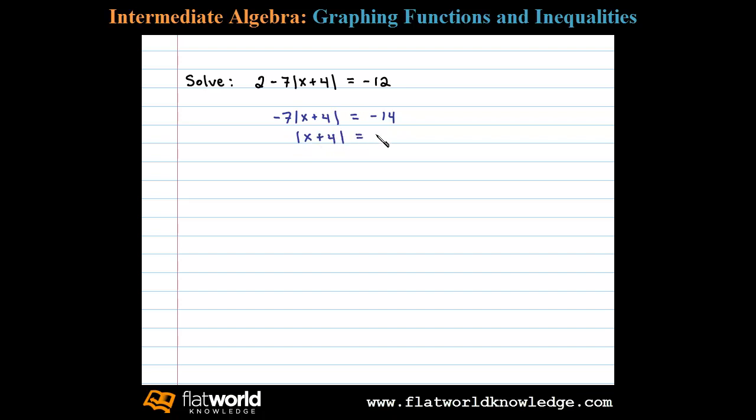Once we have the absolute value isolated, we can then set the argument here, x+4, equal to plus or minus 2.